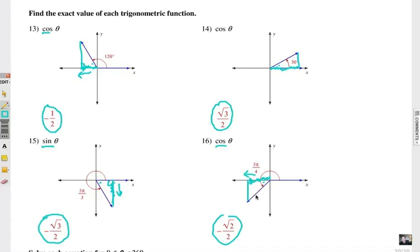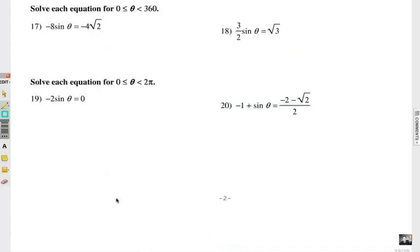Now let's get into some trig equations. The first two are in degrees. Notice how theta is between zero and 360, that's got to be degrees. Problems 19 and 20 have to do with radians, because theta has to be between zero and two pi. Solve for angle theta, and we'll look at the answers on a unit circle.